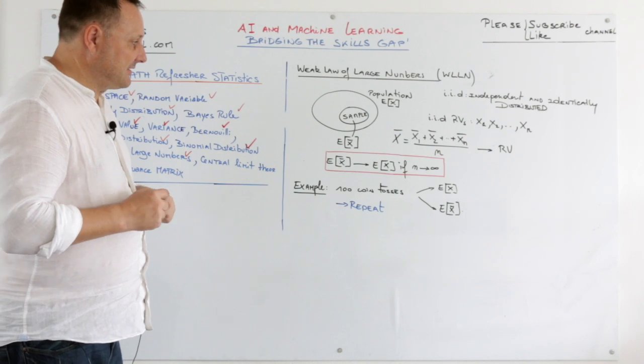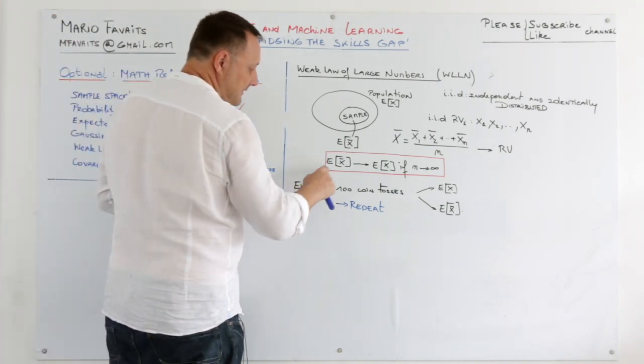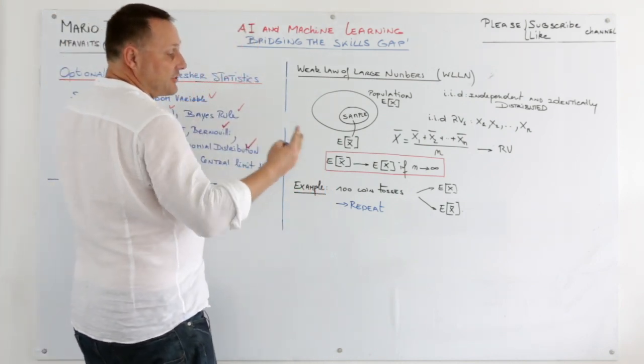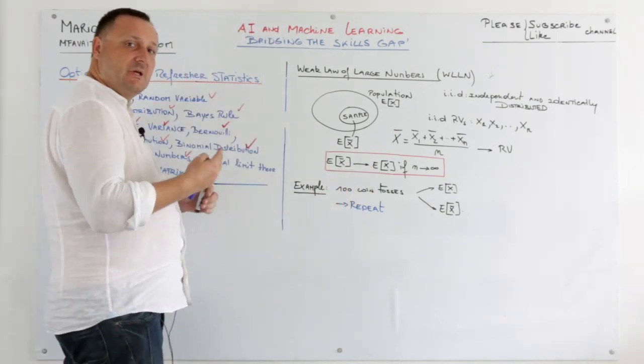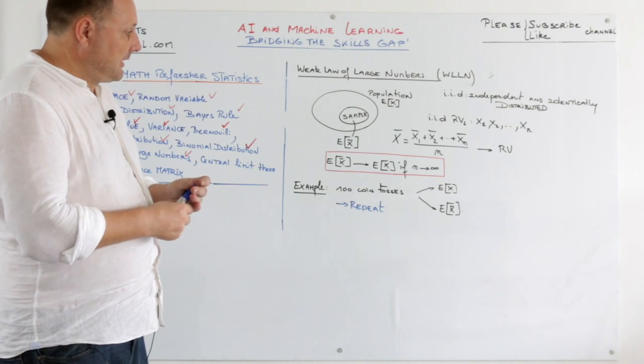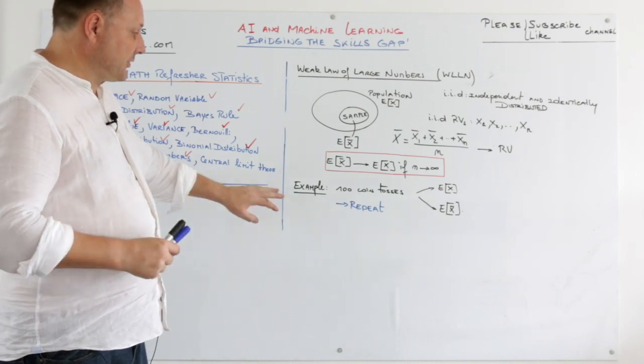The sample mean is a random variable. And if n is large enough, the sample mean will converge to the population mean. This is important.